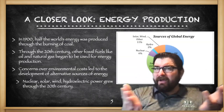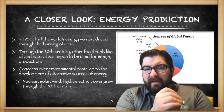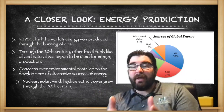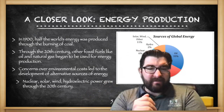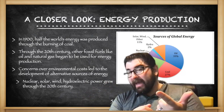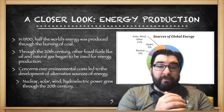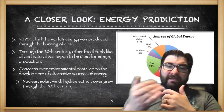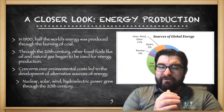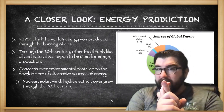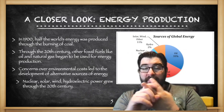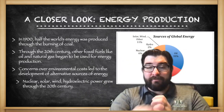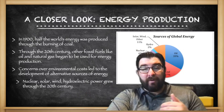With regard to energy production, in 1900 half the world's energy was produced through the burning of coal. But as we move through the 20th century, other fossil fuels entered the mix — oil and natural gas — to produce energy. Concerns over environmental costs will lead to the development of alternative energy sources, including nuclear power generation, solar, wind, and hydroelectric power, all of which will grow through the remainder of the 20th and into the 21st century.